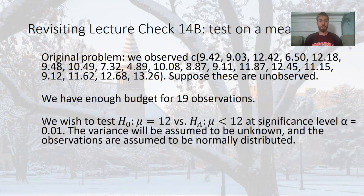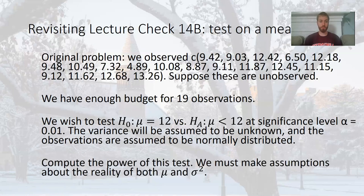Let's try another example from lecture 14B. We have enough budget for 19 observations and we want to test the null that mu equals 12 versus the alternative that mu is less than 12 at alpha equals 0.01. We'll assume the variance is unknown and the observations are assumed to be normally distributed. That makes me think that conducting the hypothesis test will be done with the t-distribution. To compute the power of this test, we do have to make assumptions about the reality parameters — we have a reality mu and sigma squared, so we need to make assumptions about both.